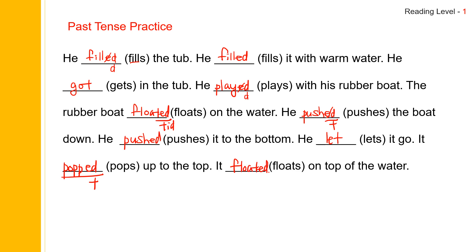Let me read the story for you. He filled the tub. He filled it with warm water. He got in the tub. He played with his rubber boat. The rubber boat floated on the water. He pushed the boat down. He pushed it to the bottom. He let it go. It popped up to the top. It floated on top of the water.